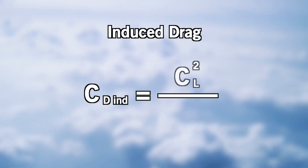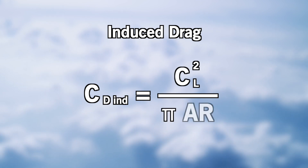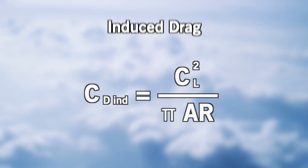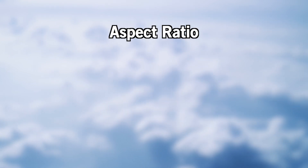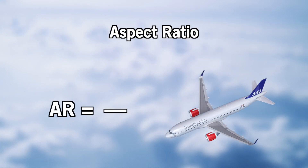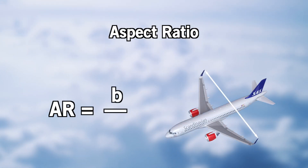The induced drag coefficient is the square of the lift coefficient divided by pi and the aspect ratio. The aspect ratio of a wing is simply the ratio of the wingspan and the mean chord.